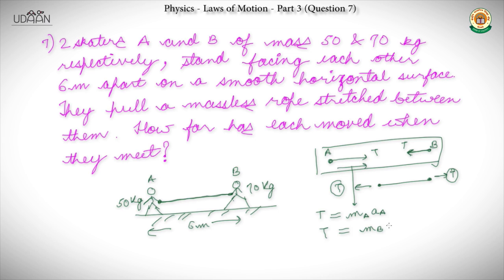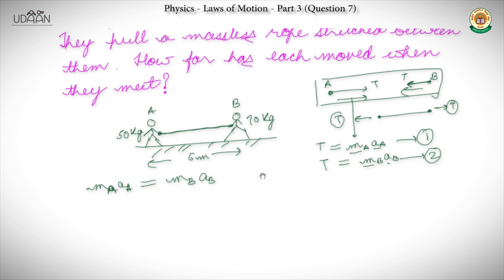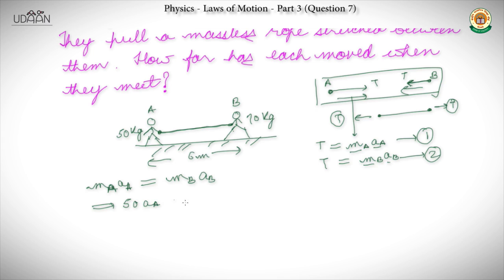From equations 1 and 2, we know MA·aA = MB·aB. So we have 50·aA = 70·aB, which gives aA = (7/5)·aB. This gives us the relation between the accelerations.